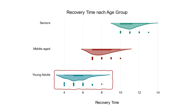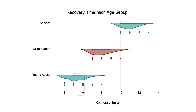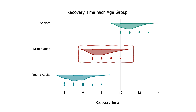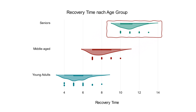Let's have a look at young adults. The recovery times range between 4 to 8 days with a higher concentration around 5 to 6 days. This indicates quicker recovery and is visualized as a broad section in the middle of the violin plot. In the same way, we can interpret the results of middle-aged and seniors.